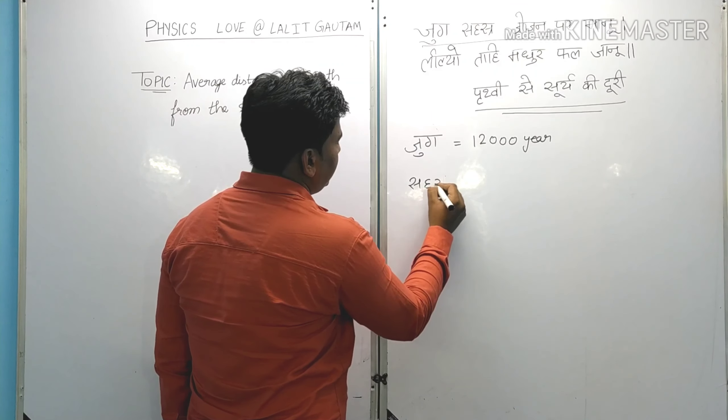Let us start to calculate the distance. Jugh stands for 12,000 years. Sehastra is a kind of multiplier — it is equal to 1,000. And Jojan is equal to 8 miles.